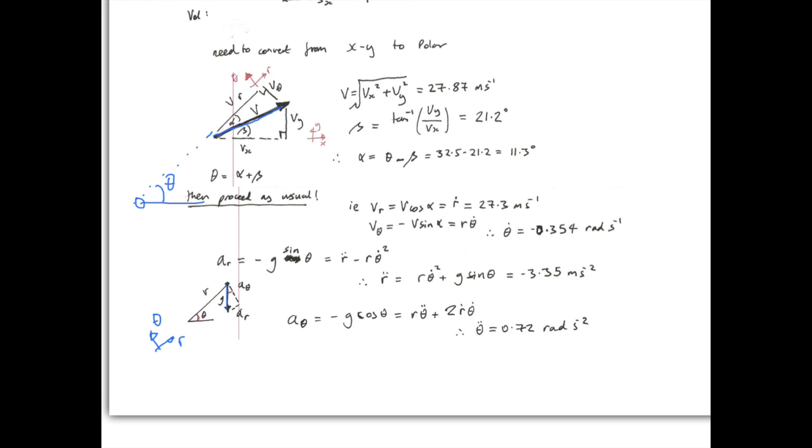And, of course, exactly the same way for A Theta, the Theta component of acceleration. Again, this is negative because it's going against the positive direction of Theta, and this is G cos Theta. So, G cos of the angle Theta is this component, and it's negative. And this is equated to the definition for A Theta, and again, Theta double dot can be made the subject, and the answer is found to be 0.72 radians per second squared.